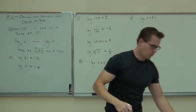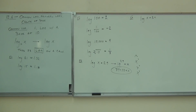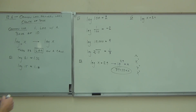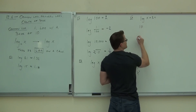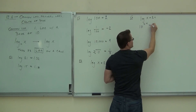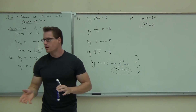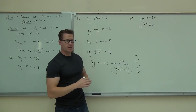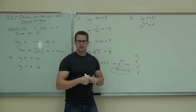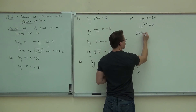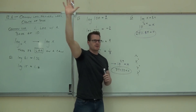Let's do log of x equals 3.4. To solve logarithms, you must write them as exponentials. Your base is 10 — it's a common log. The exponent is 3.4, and that equals x. So: 10 to the 3.4 equals x. That's going to be somewhere between 1,000 and 10,000. Use your calculator — you'll get approximately 2,511. Don't forget to bring your calculators.